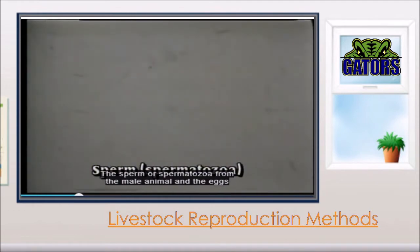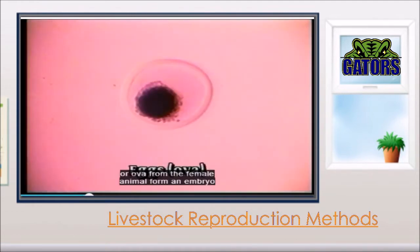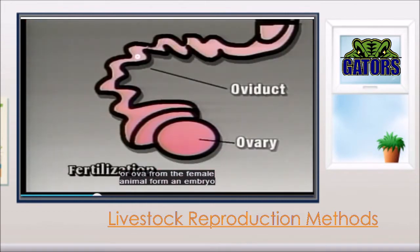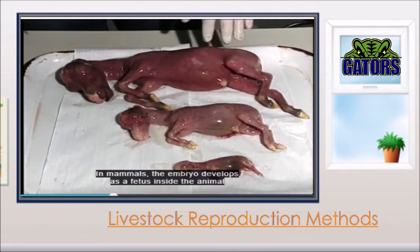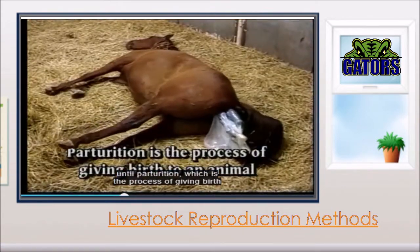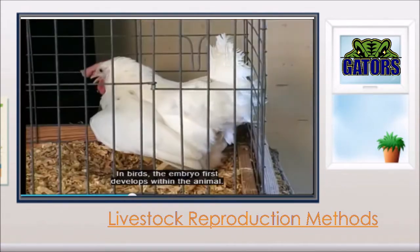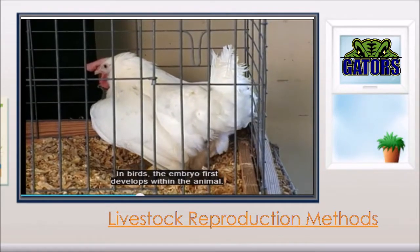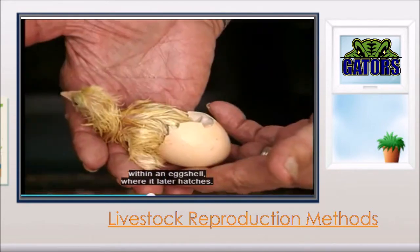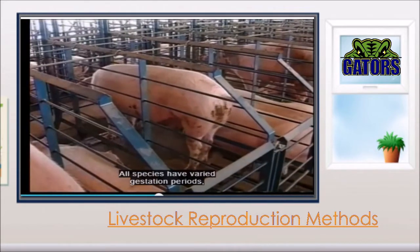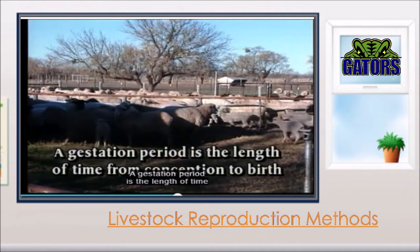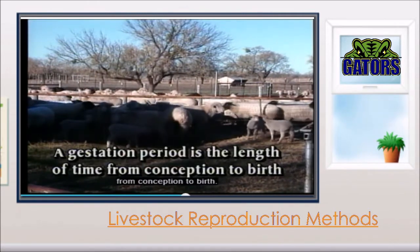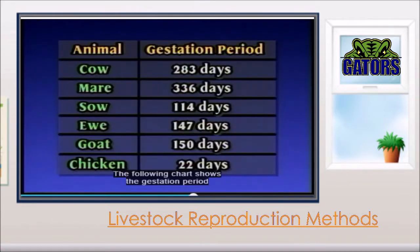The sperm, or spermatozoa, from the male animal, and the eggs, or ova, from the female animal form an embryo through the process of fertilization. In mammals, the embryo develops as a fetus inside the animal until parturition, which is the process of giving birth to an animal. In birds, the embryo first develops within the animal, and then it continues development within an eggshell, where it later hatches. All species have varied gestation periods. A gestation period is the length of time from conception to birth.